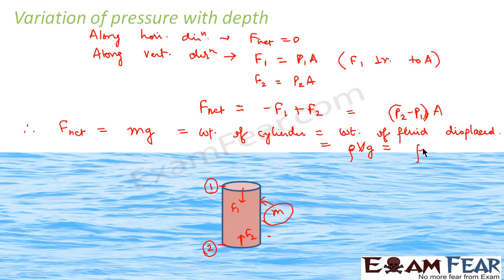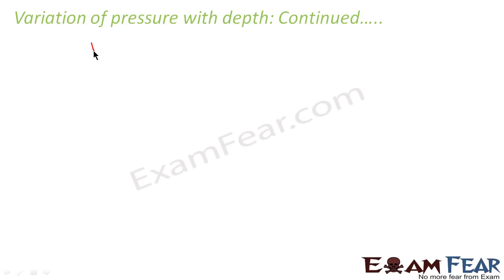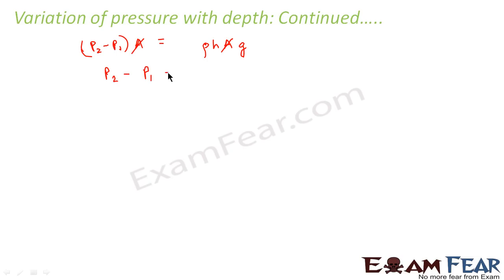The volume of the cylinder is height h times cross-sectional area A, since volume = height × area. So we get (P2 − P1) × A = ρ × h × A × g. The area A cancels from both sides, giving us P2 − P1 = ρgh.